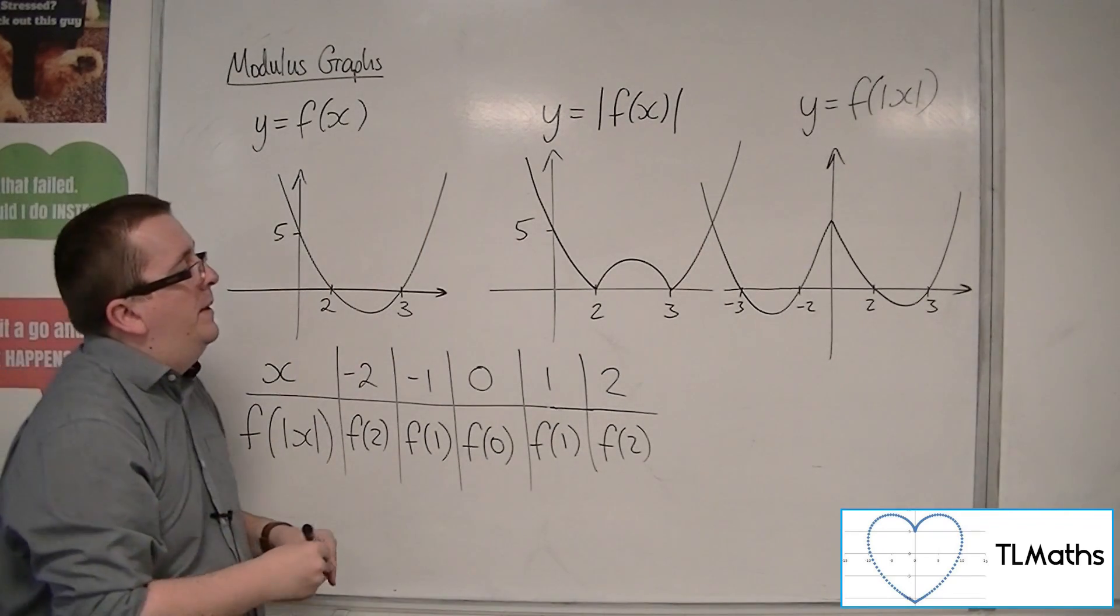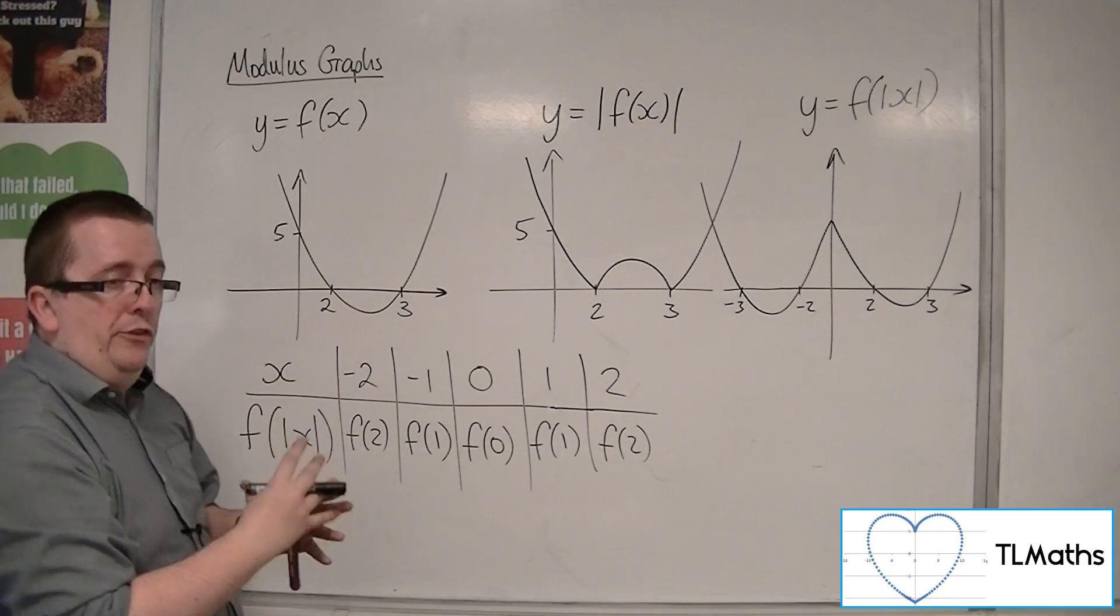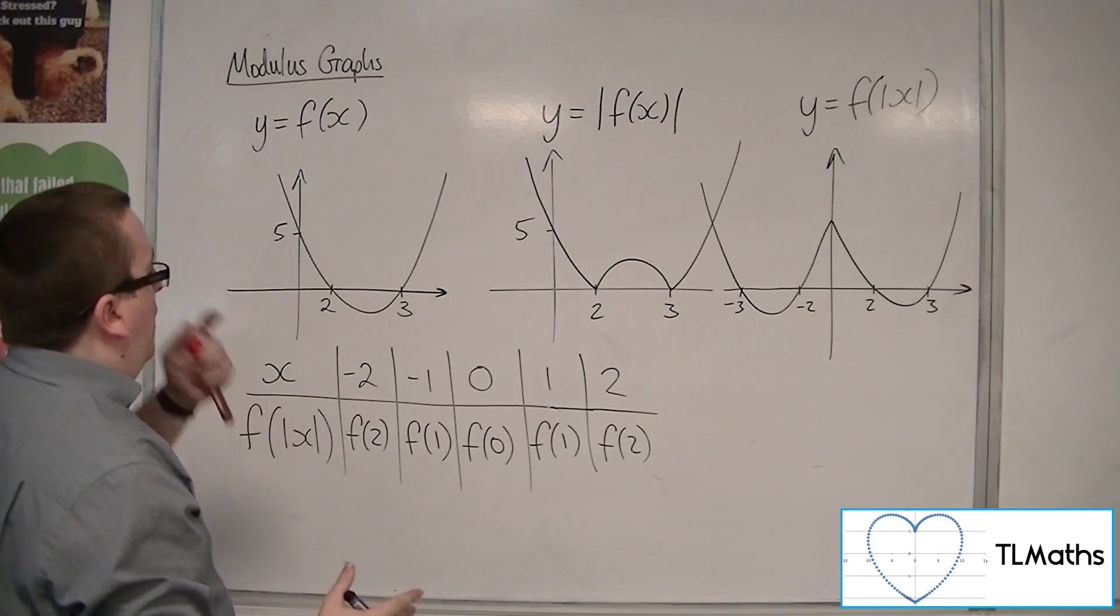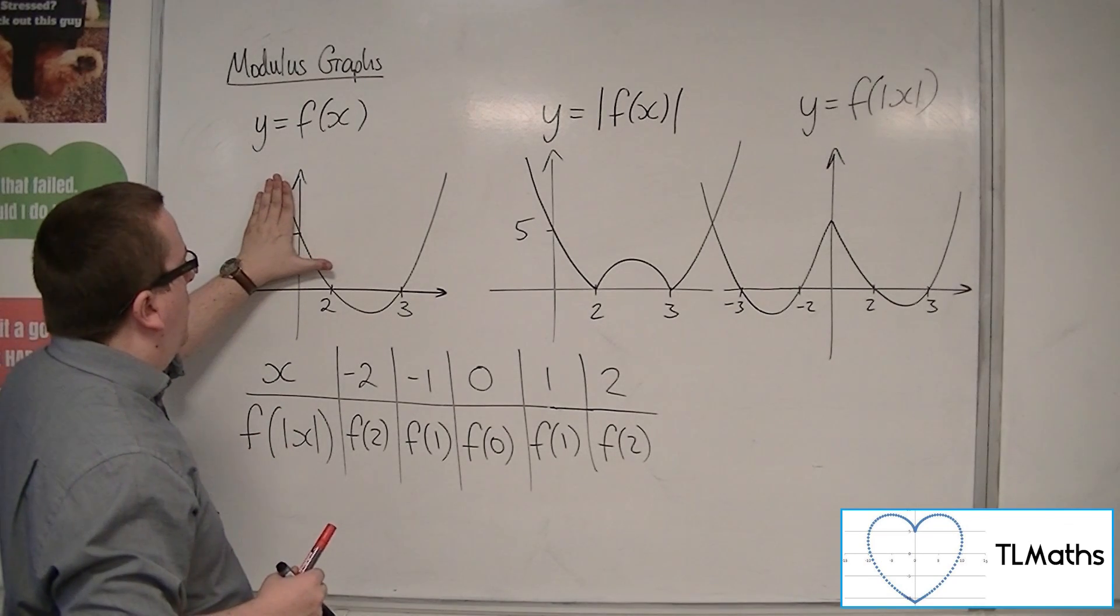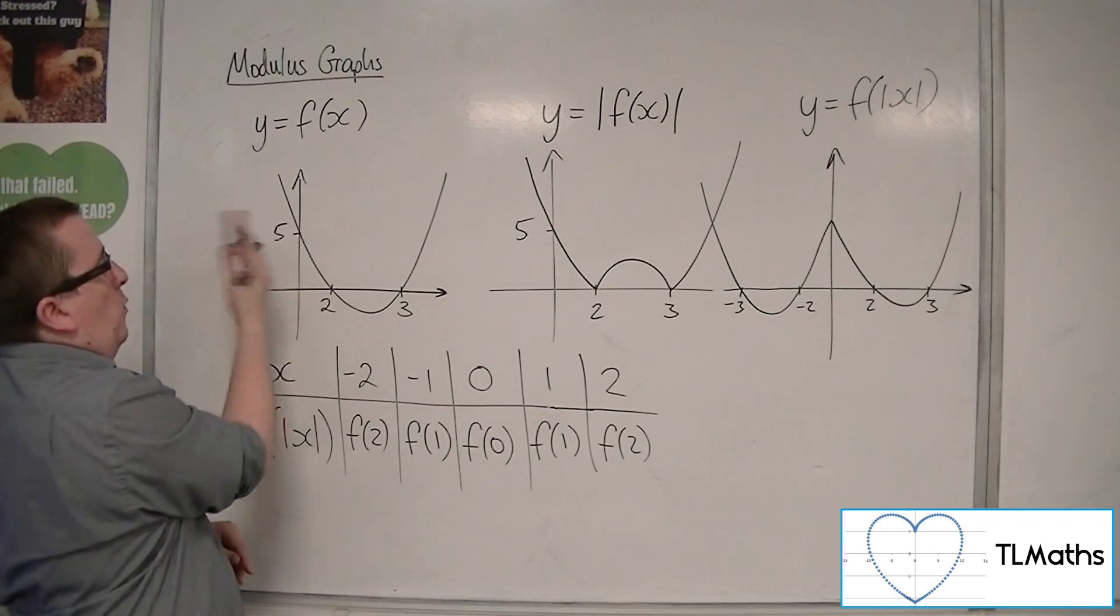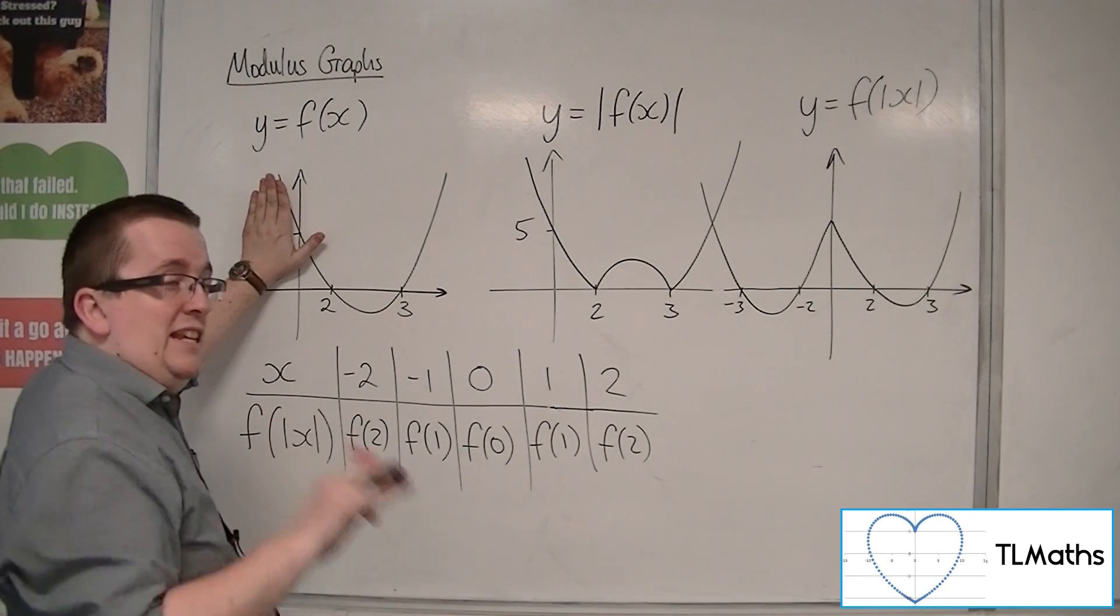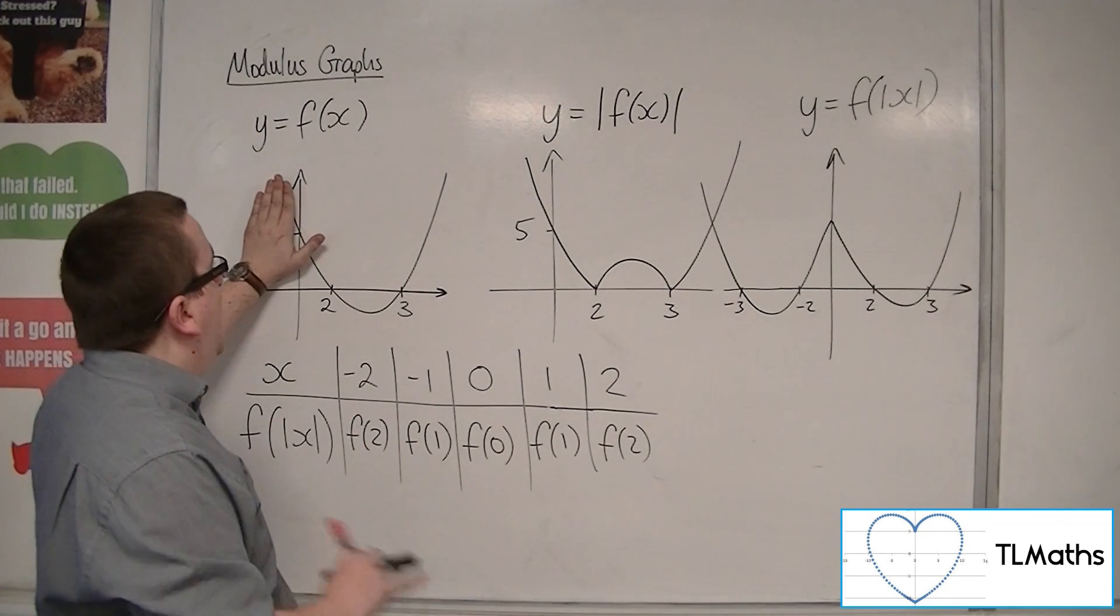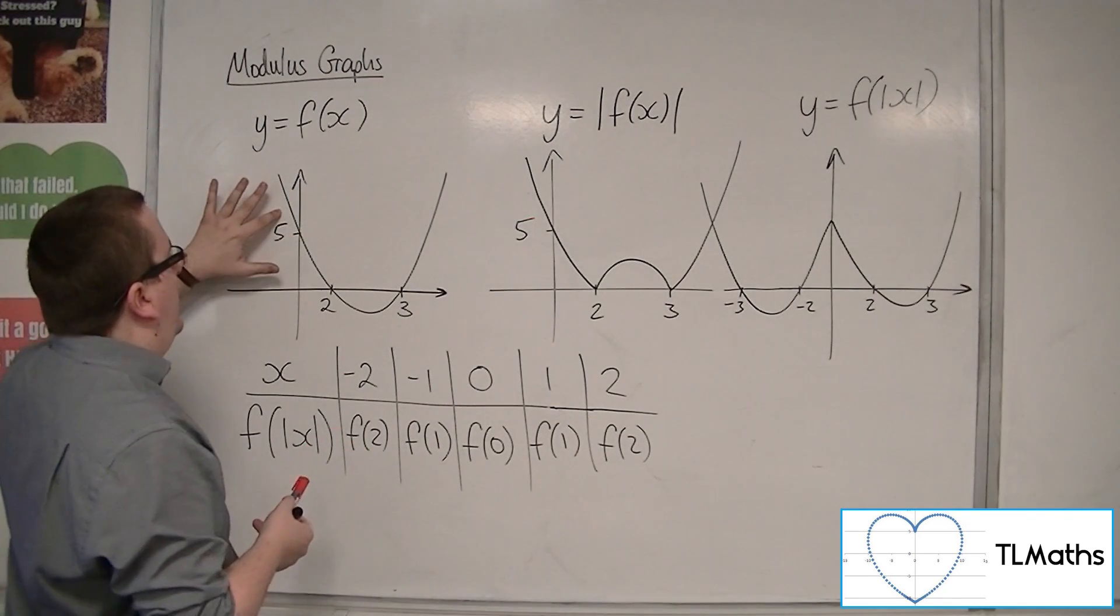What's happening is that when I put a modulus sign just around each of the x's, what happens is that whatever is to the right of the y-axis is then reflected in the y-axis. So anything that was to the left of the y-axis gets disappeared, because I cannot put minus values in and get those y values out.